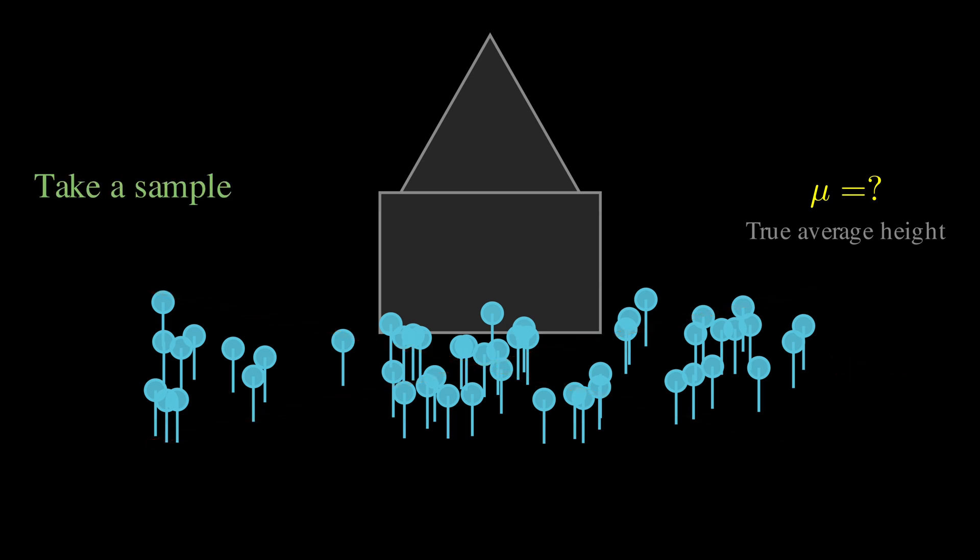Now here is where things get tricky. When you take that sample of let's say 30 students and calculate their average height, you know that's probably close to the true average of all students. But you don't know exactly how close. And this uncertainty is what statistics is all about managing.